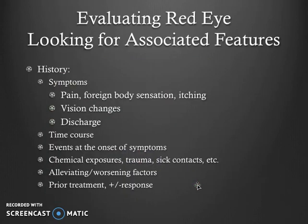We also need to look for associated features. The history is always essential. The symptoms we are specifically looking for are pain, foreign body sensation, or itching, vision changes, and any discharge from the eye. The time course is also essential — noting whether it's acute versus a chronic process. Events at the onset of symptoms can help guide us, as well as exposures to environmental toxins, trauma, or sick contacts.